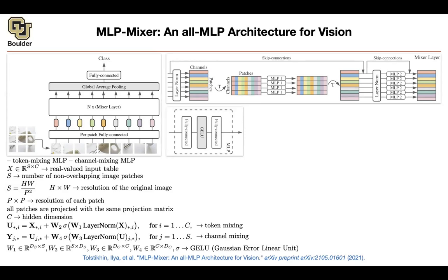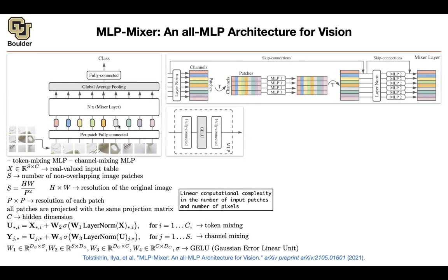One cool thing compared to transformers is that the architecture has linear complexity in terms of sequence length, and as a consequence, linear in terms of the number of pixels in your image. This is unlike transformers, which had quadratic cost because every single vector had to pay attention to every other vector in the sequence. This architecture is linear — it only depends on the size of S.